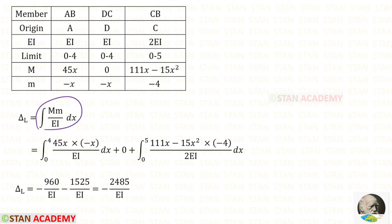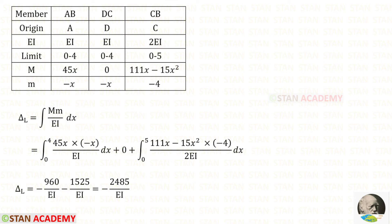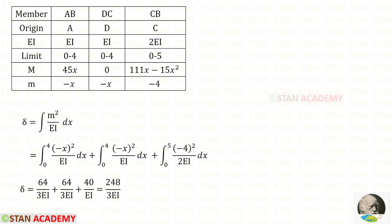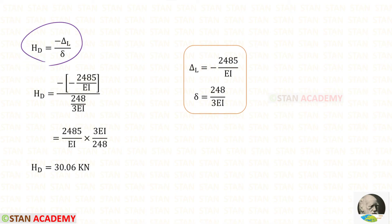Using this formula we can find δ_L. For CB the flexural rigidity is 2EI, so instead of EI we apply 2EI. For DC, M is 0, so no integration is needed — we directly apply 0. Then using a calculator we perform these two integrations. For δ_L we will get the computed value. Using the formula we can also find δ. In the formula applying δ_L and δ, we finally get HD = 30.06 kN.